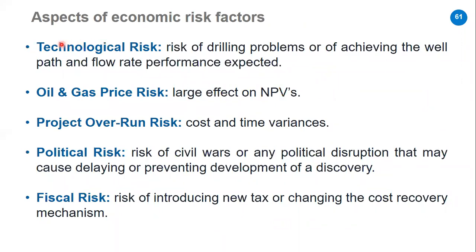We have many aspects of risk. First, technological risk — for example, drilling problems, not achieving target depth, or flow rate being lower than expected. Second, oil and gas price risk — prices always fluctuate and this is considered an increased risk. Third, project overrun risk — possibly due to a recession causing project delays. Fourth, political risk — civil war or political disruption affecting oil prices and causing development phase delays. Finally, fiscal risk — such as a country introducing new taxes or changing the cost recovery mechanism. All of these must be handled in our economic model.